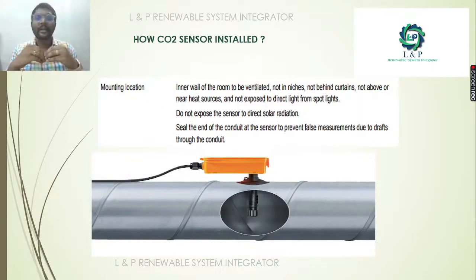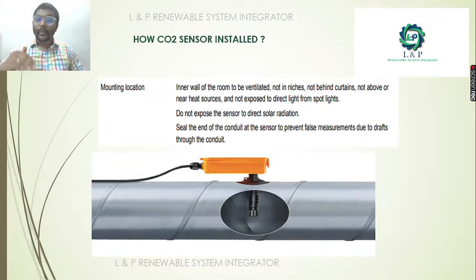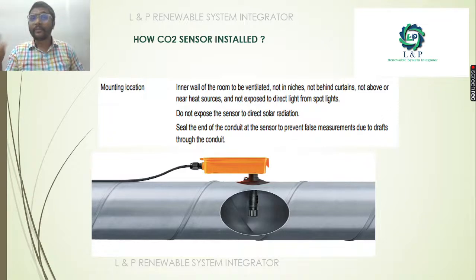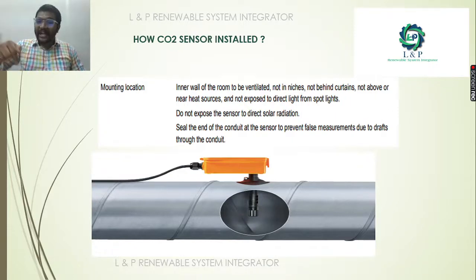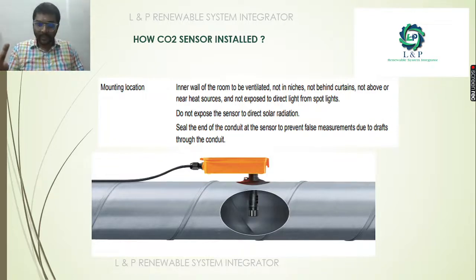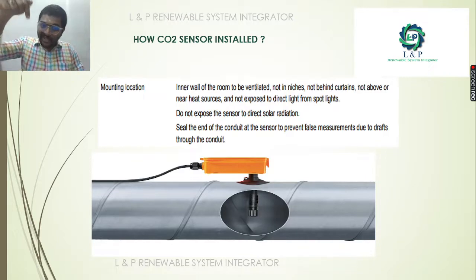Mounting is very much important. If you plan to mount inside a room, there should be enough ventilation. We should not install the sensor behind curtains, near any heat sources, or expose it directly to light. Even installing a sensor directly under a spotlight can cause measurement changes. Most importantly, we should not expose it directly to solar radiation. If planning to install in a conduit, to prevent false measurements due to draft, we need to seal the conduit. Also, if installing in ducts, please close the ducts properly to avoid false measurements.